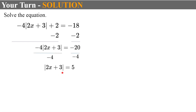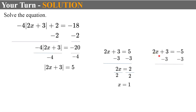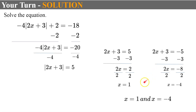Now I'm ready to write two equations because 2x plus 3 can be positive 5 or negative 5. Solving the first: subtract 3 from both sides, giving 2x equals 2; divide by 2, and x equals 1. Solving the second: subtract 3 from each side, giving 2x equals negative 8; divide by 2, and x equals negative 4. So the solutions are 1 and negative 4.